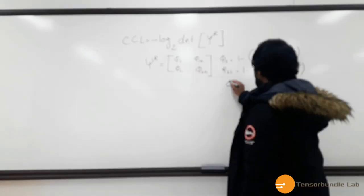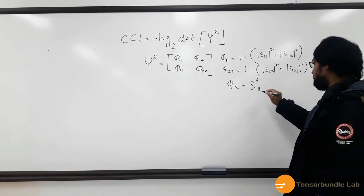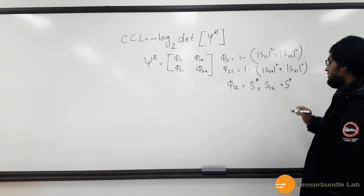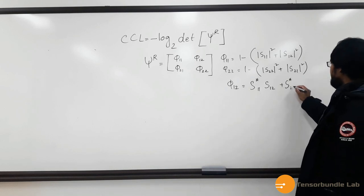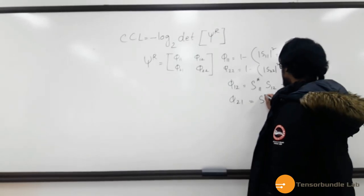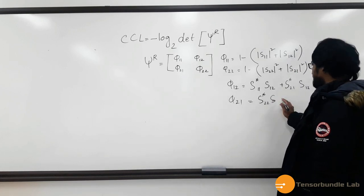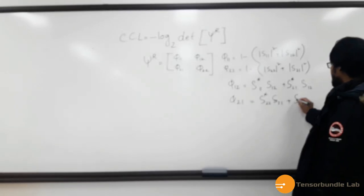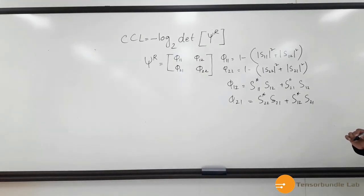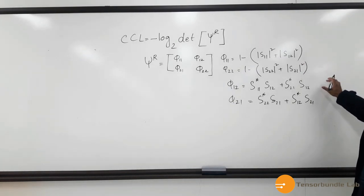And then we have the ρ12 which can be defined as the complex conjugate of S11 times S12 plus complex conjugate of S21 times S22. And in the similar manner, we have ρ21 equal to complex conjugate of S22 times S21 plus complex conjugate of S12 times S11.